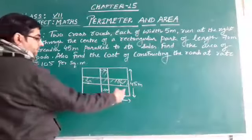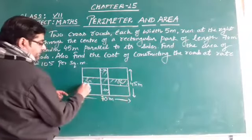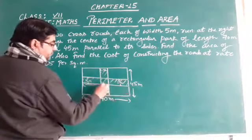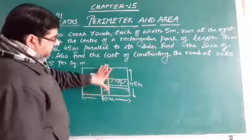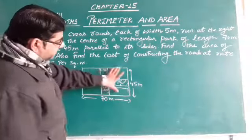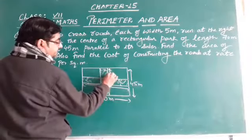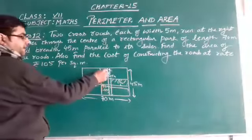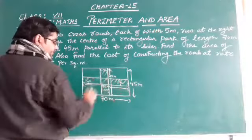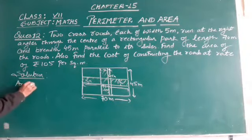So the length of this road is along the length of the rectangular park, which is 70 meters. The length of this road is along the breadth of the rectangular park, which is 45 meters. The width is the same, 5 meters, from this side to that side. So the area of the road: